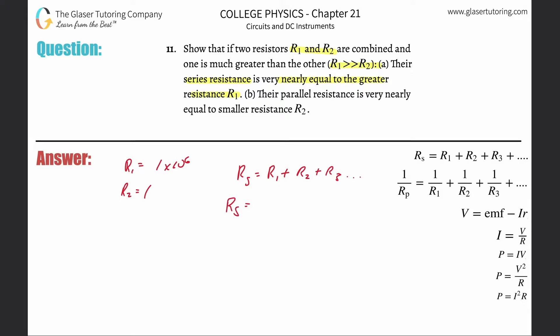So the resistance then, the equivalent resistance in series would be 1 million plus 1. What is 1 million plus 1? It's basically a million, right? Obviously it's a million and one, but it's so close to a million. That's what they're trying to say. So that's letter A.